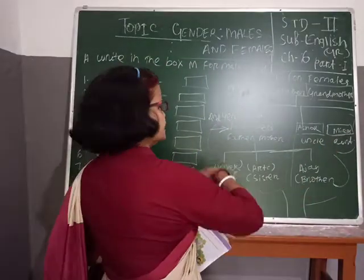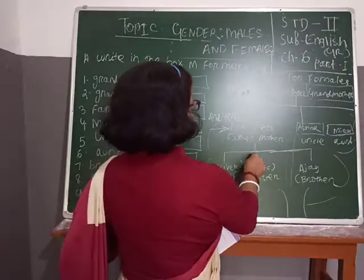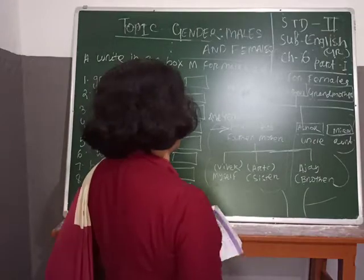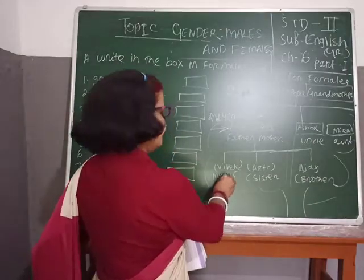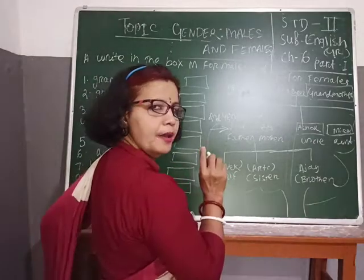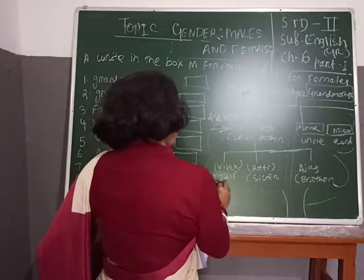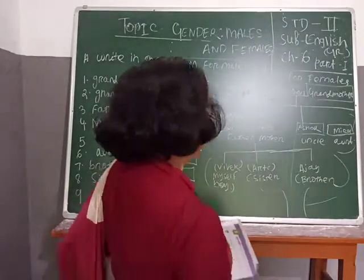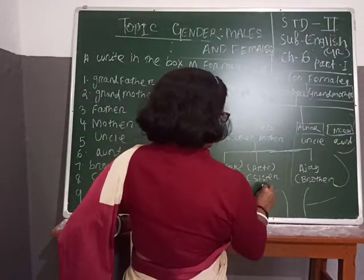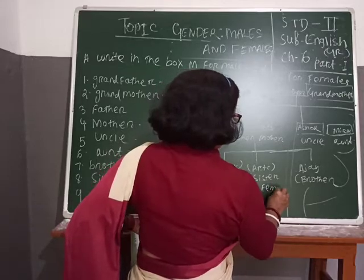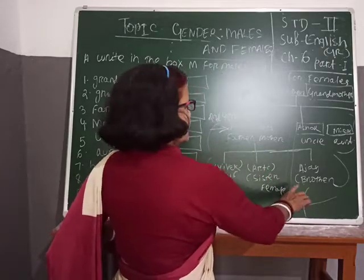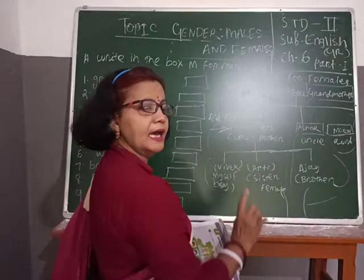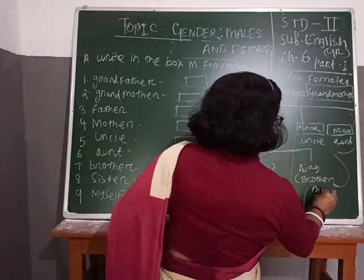Now, they are the children. Your name — whatever your name — you can think. Suppose your name is Bibek. Bibek is a boy, so his gender is male. Arthi is your sister — female. Bibek and Arthi and Ajay. Ajay is a brother of Bibek and Arthi, so he is also male. This generation belongs to the third generation.